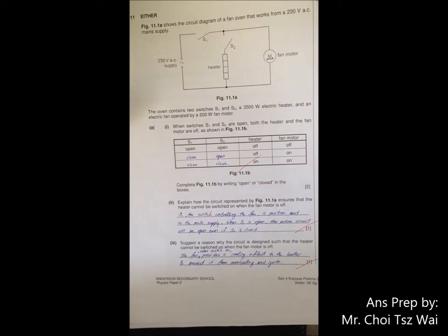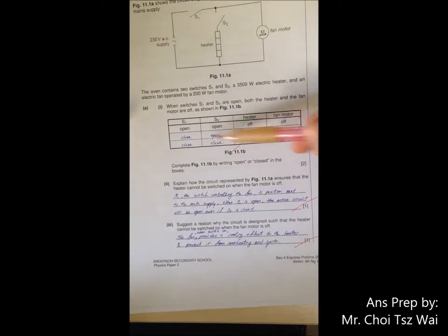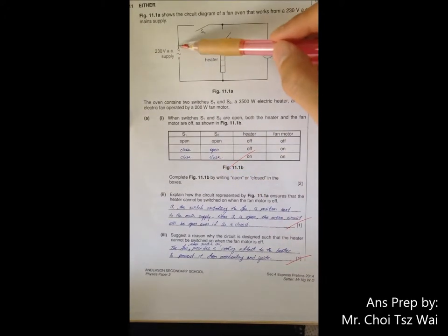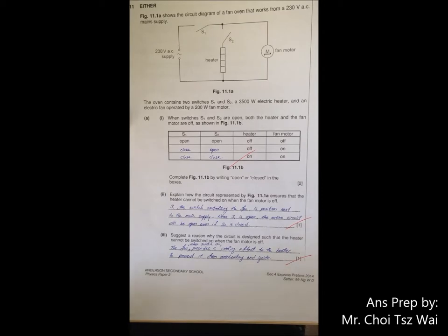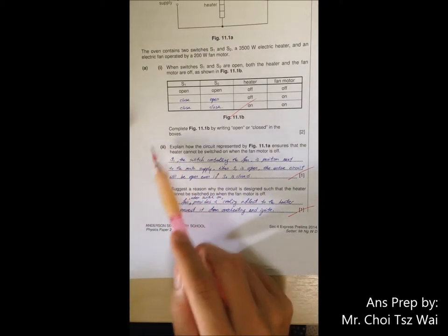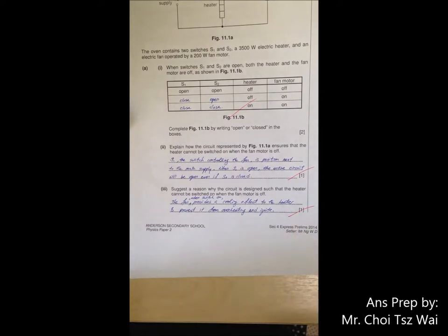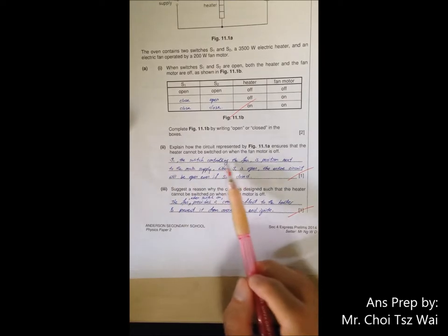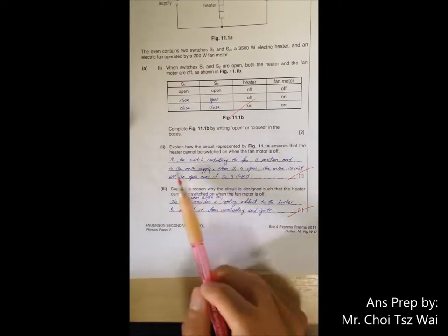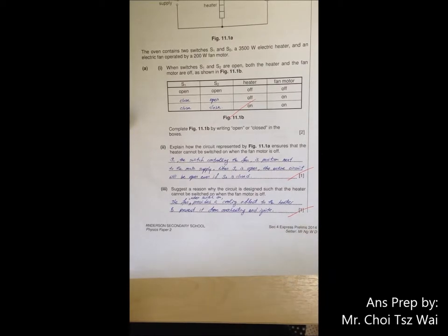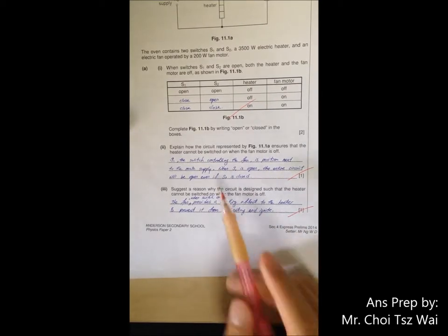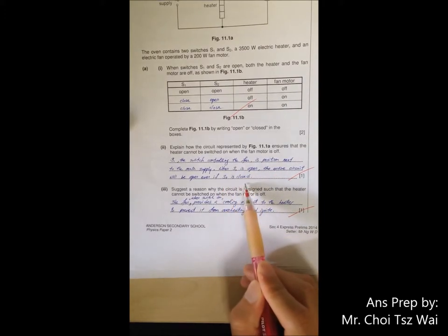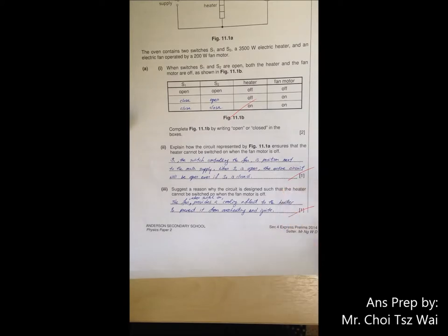This is just an oven. Quite simple. Open and close switch. If you are not sure, trace the current and you should be able to deduce it. Part two. Part two, I think most of you can explain it. Just that the word you use must be very careful. Highlight that the switch is actually S1, controlling the fan, is actually positioned just next to the main supply. So if S1 is open, the entire circuit will be open, even if S2 is closed. So you need to make reference with S2 and how the circuit behave. You need to make this comparison. Then the whole point will be highlighted.